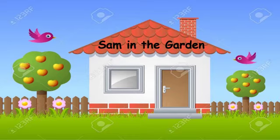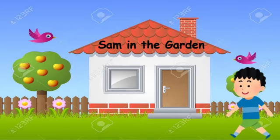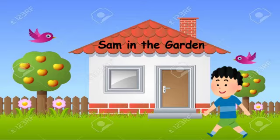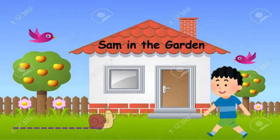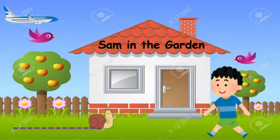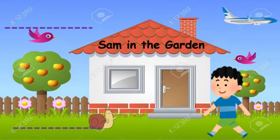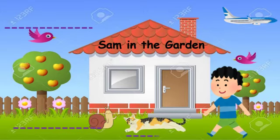One sunny day, Sam was walking in his house garden. Suddenly, he saw a snail moving on its horizontal path. After that, he saw a plane moving in the form of horizontal line. Then, he saw a cat laying on the ground horizontally.